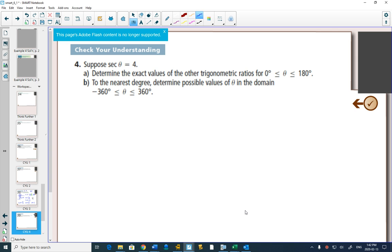Well, probably the easiest one to do would be to say that if I know secant is 4, what would cos be? 1 over 4, the reciprocal.